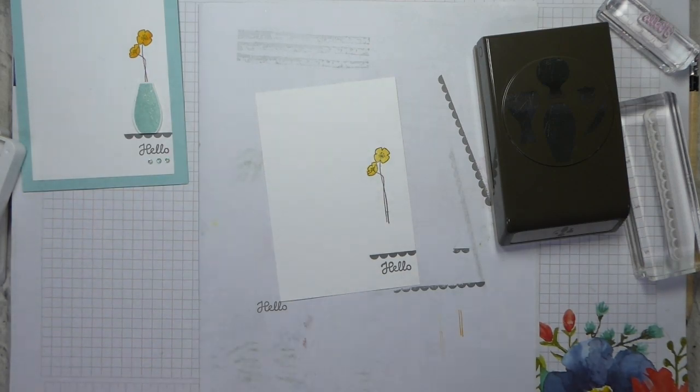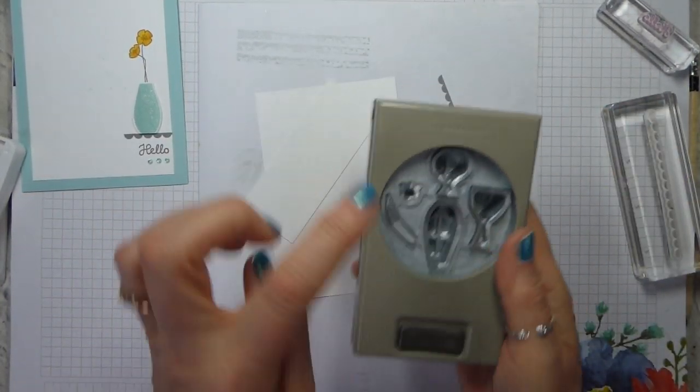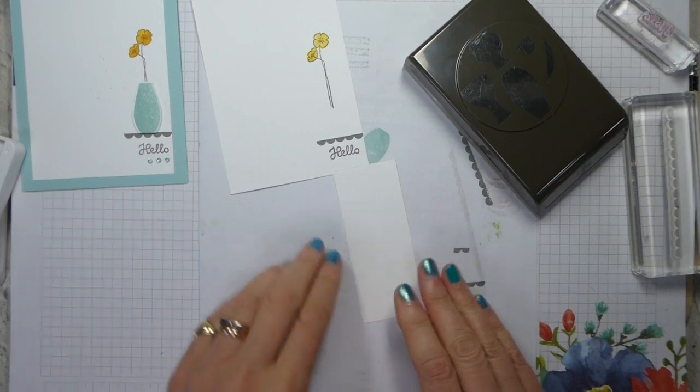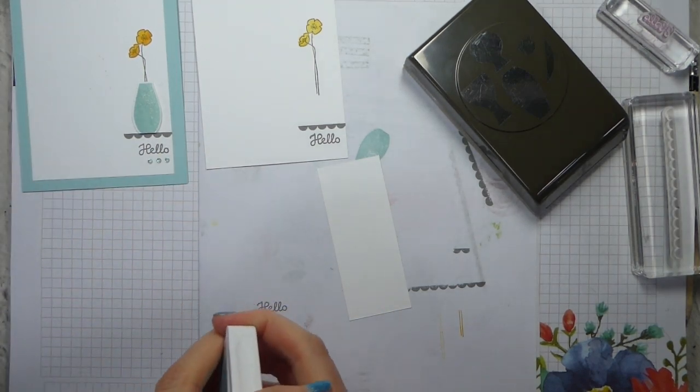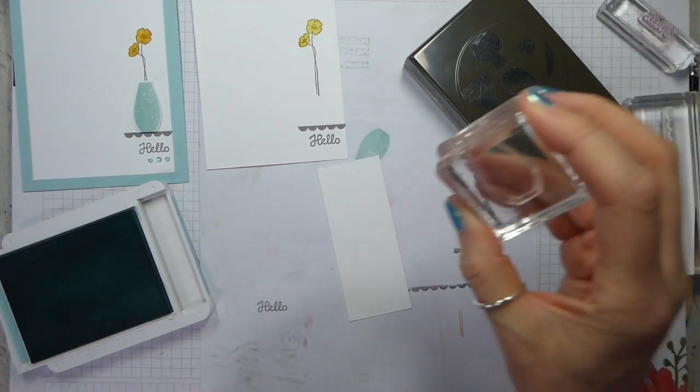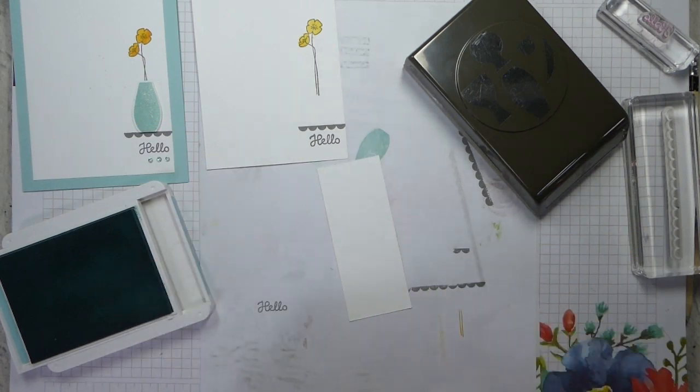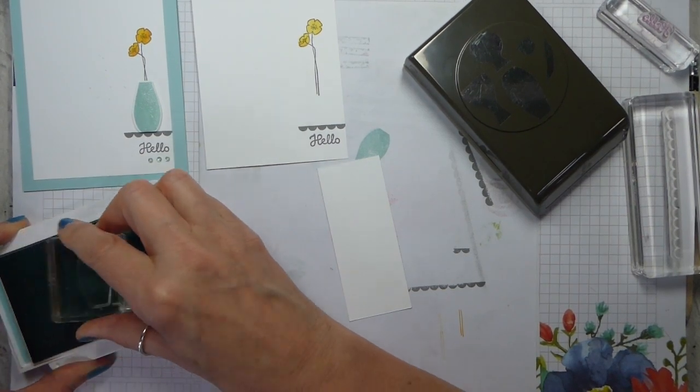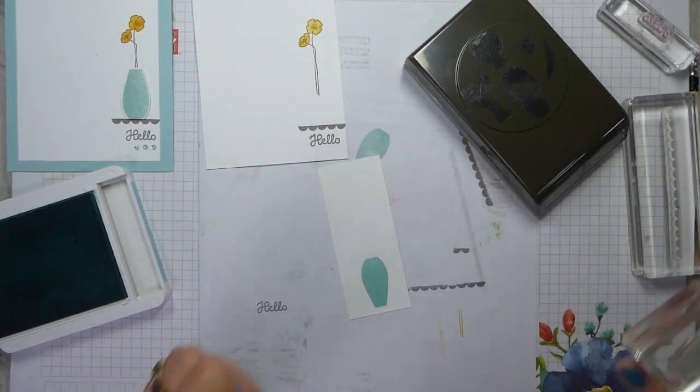So I just need a little scrap of Whisper White for the vase. Now, it's always worth remembering which way up your punch is. So my vase is actually going to be upside down, and I need it near the edge. So let's close the Mango Melody, open the Pool Party, and grab my vase. Now, I have used this a few times, but I'm still going to just rough it up a bit with the back of my hand, just so that it takes the ink better. So I'm going to stamp it upside down. I mean, I say it's upside down. This might be the way up that you want your vase. And then just stamp that down. And there's our vase.